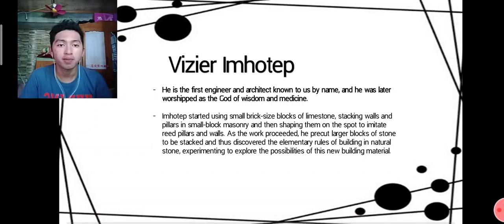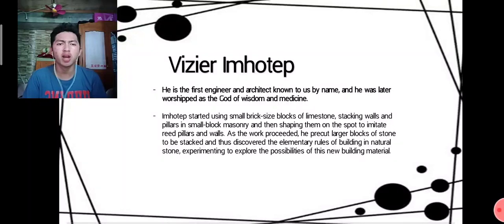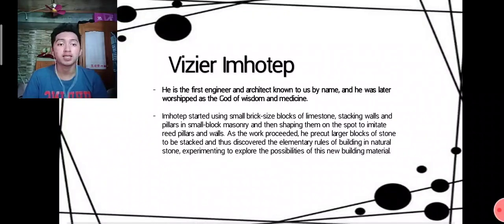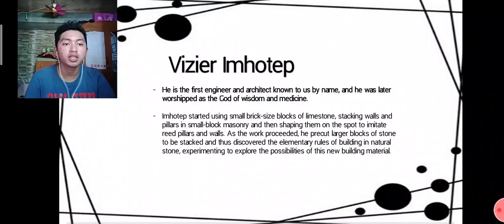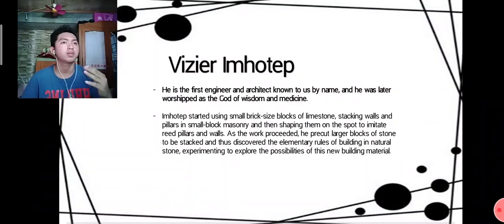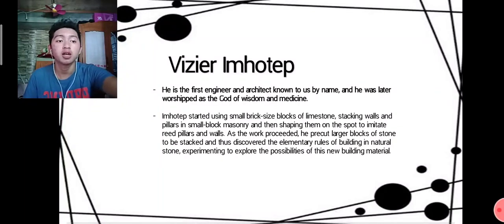Vizier Imhotep is the first engineer and architect known by name, and he was later worshipped as the god of wisdom and medicine. Imhotep started using small brick-sized blocks of limestone, stacking walls and pillars in small block masonry, then shaping them to imitate reed pillars and walls. As work proceeded, he pre-cut larger blocks of stone and discovered the elementary rules of building with natural stone, experimenting to explore the possibilities of new building materials.